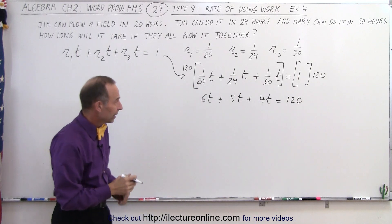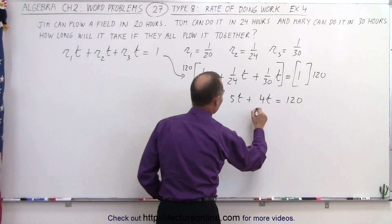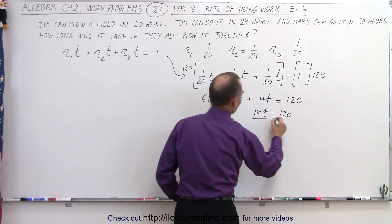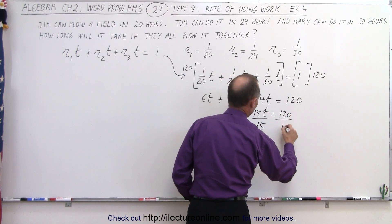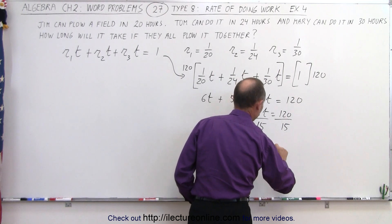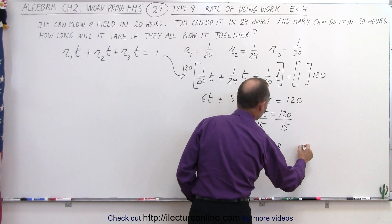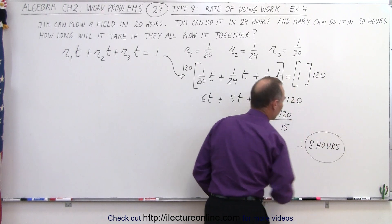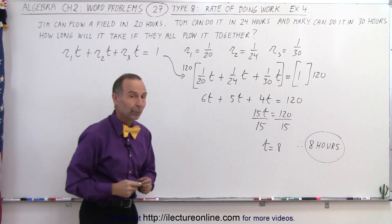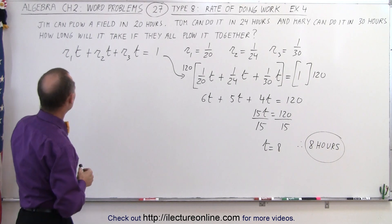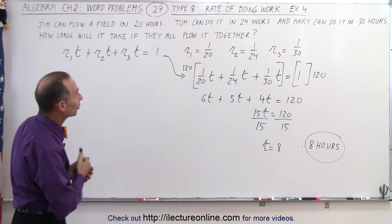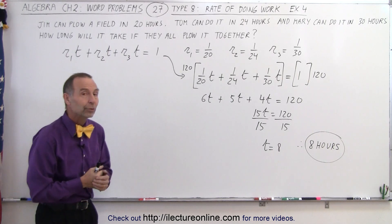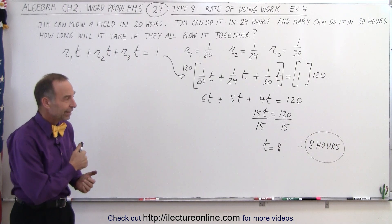Adding all the terms on the left side together, that would be 15t equals 120. Divide both sides by 15, and we get t equals 8. In other words, 8 hours is the time it will take if all three of them plow the field together — when separately, Jim can do it in 20 hours, Tom can do it in 24, and Mary can do it in 30, but all three together can do it in 8 hours. And that's how it's done.